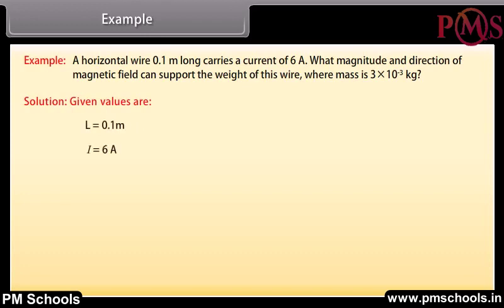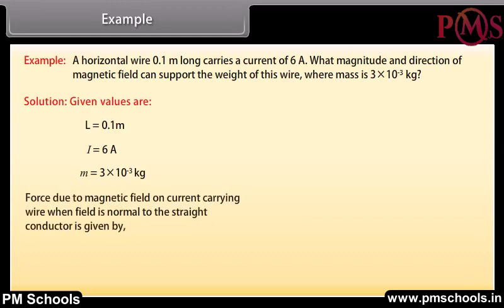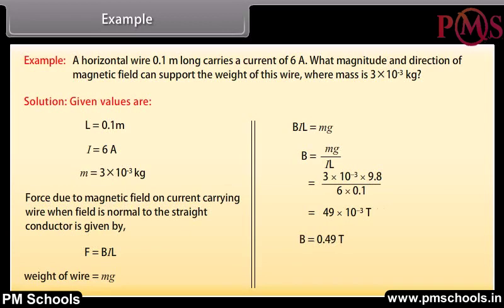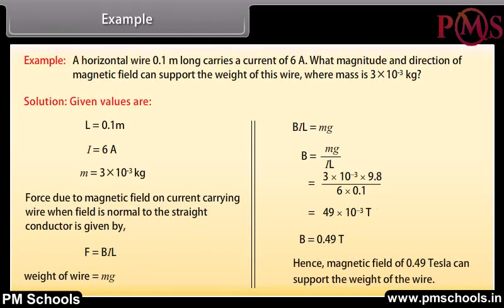The force due to the magnetic field on a current carrying wire when the field is normal to the conductor equals BIL, and the weight of the wire is mg. On equating these: BIL = mg, so B = mg / IL. Substituting the values, B = 0.49 T. Hence a magnetic field of 0.49 tesla can support the weight of the wire.